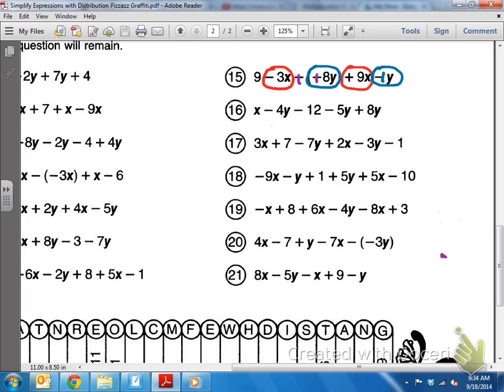All right, so negative 3x plus 9x, different signs, subtract. So 9 minus 3 is positive 6x.